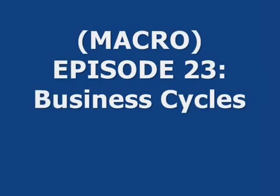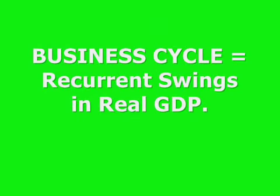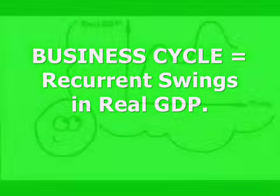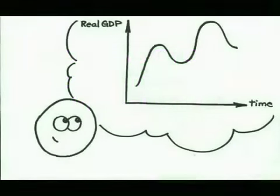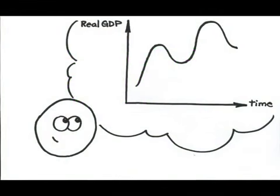By definition, the business cycle is the recurrent swings in real GDP. What this means is that if you watch real GDP over time, it follows a wave-like pattern or a cycle.